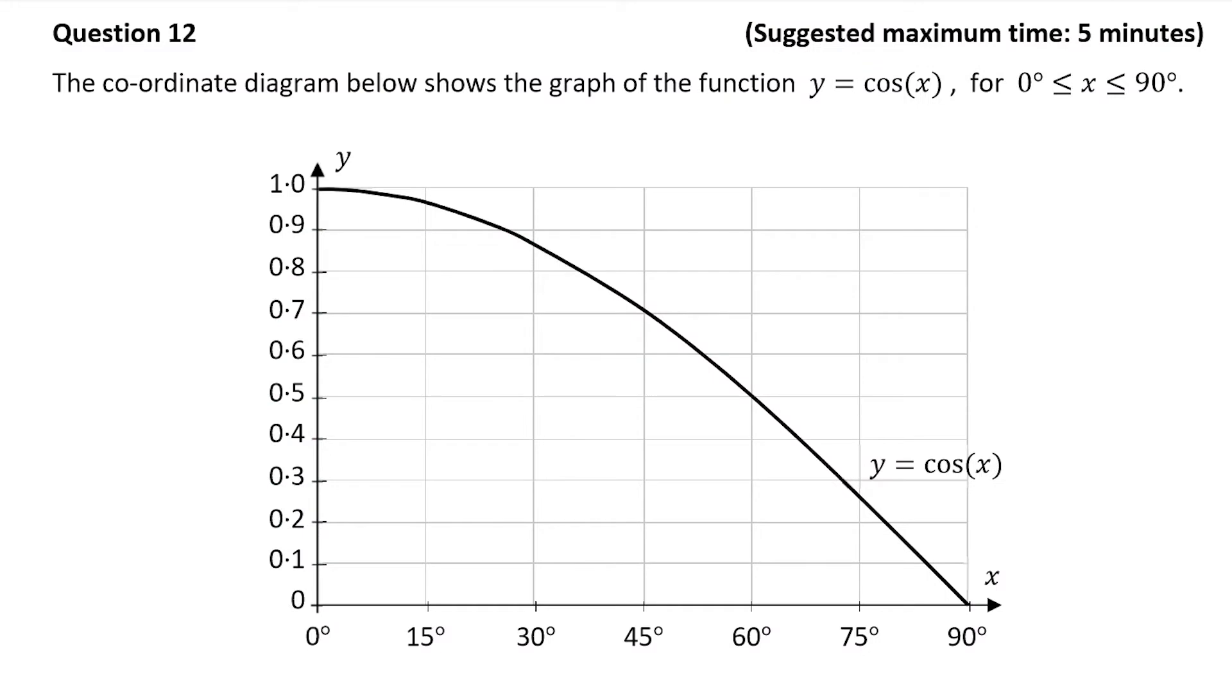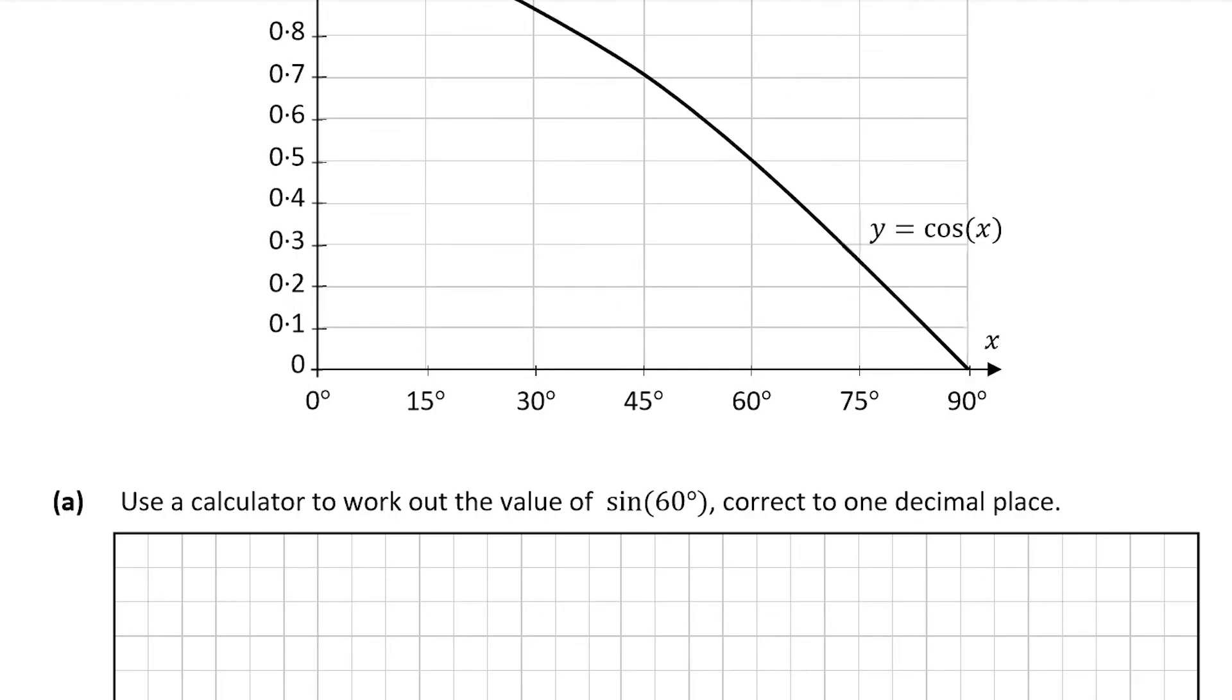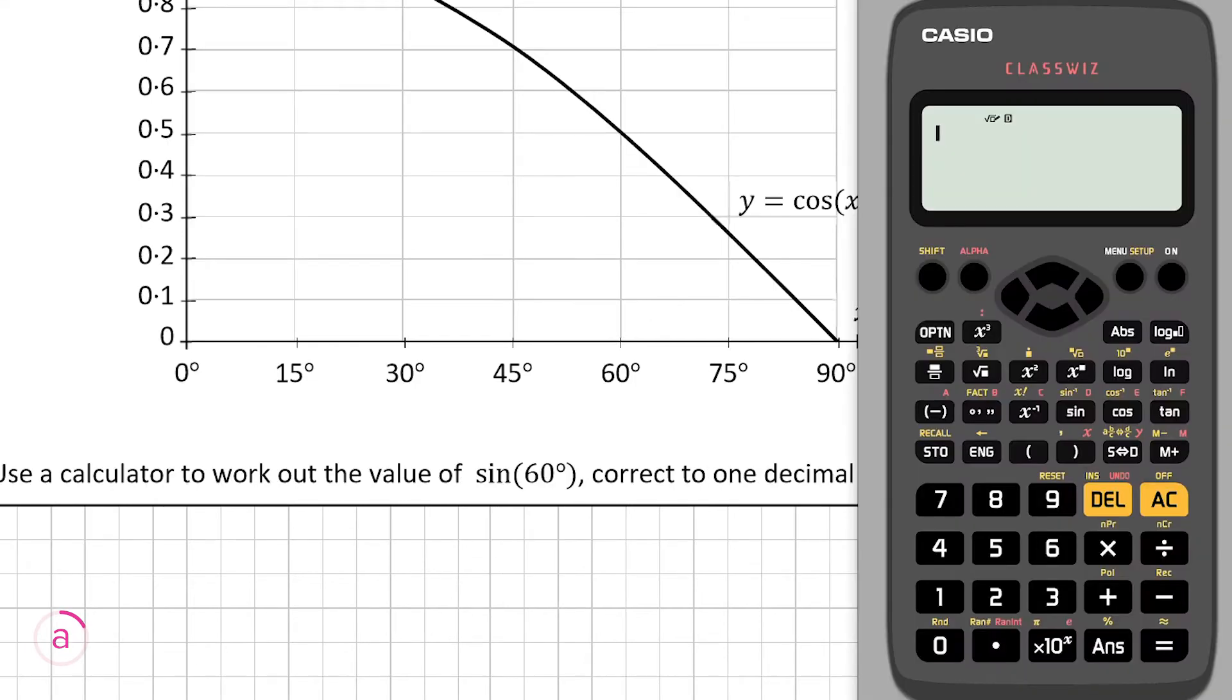We're shown a graph with the function y equals cos(x) and now let's have a look at part a of the question. Part a tells us to use a calculator to work out the value of sin(60) correct to one decimal place. So we just need our calculator for this.